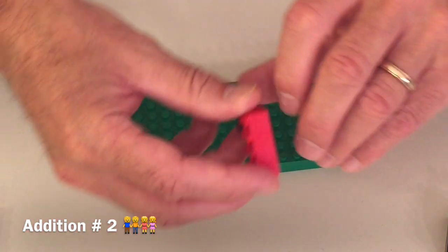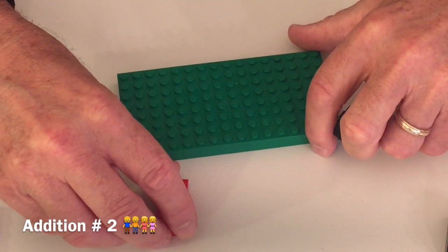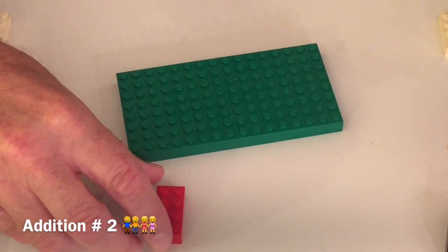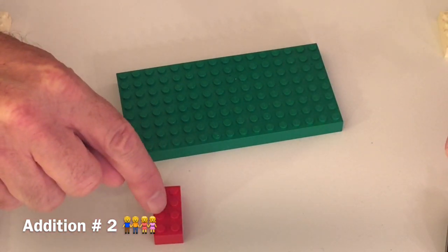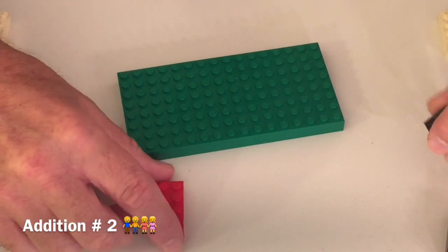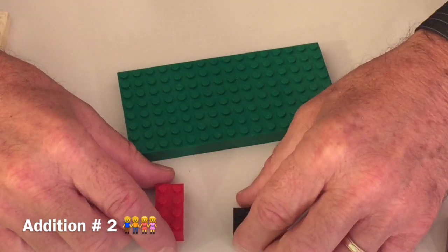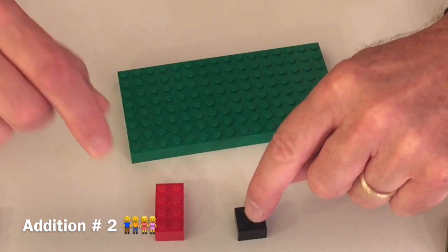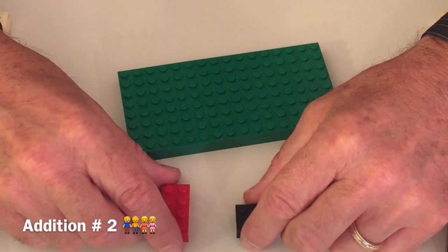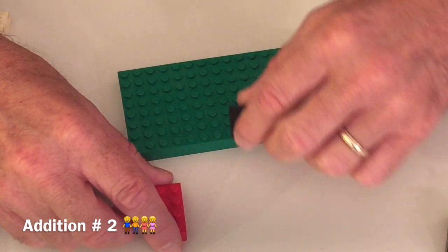And first we're going to take eight: one, two, three, four, five, six, seven, eight. And add four: one, two, three, four. If we add these together, what will we get?